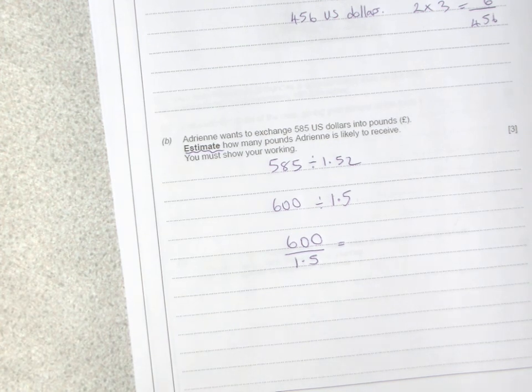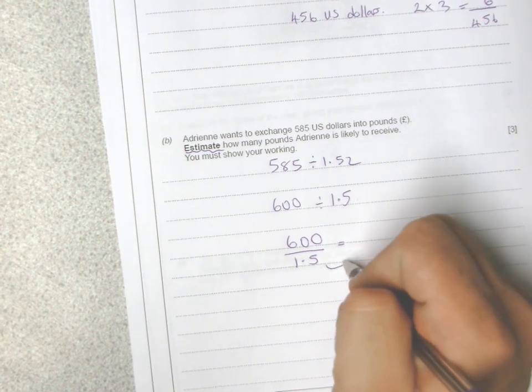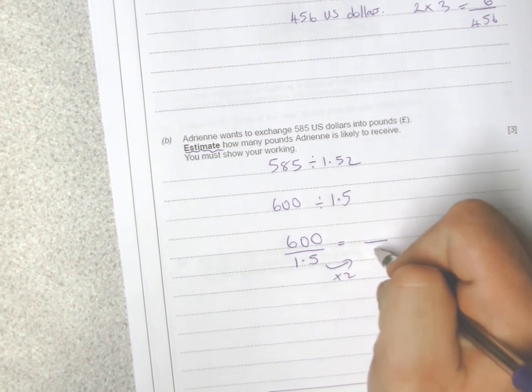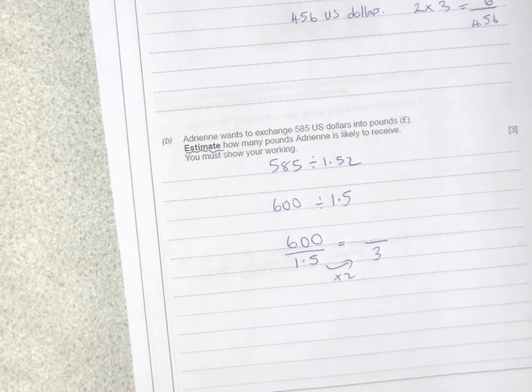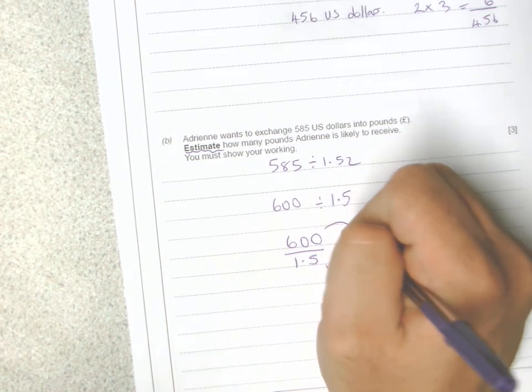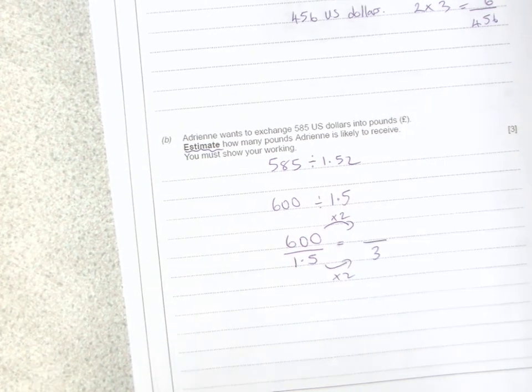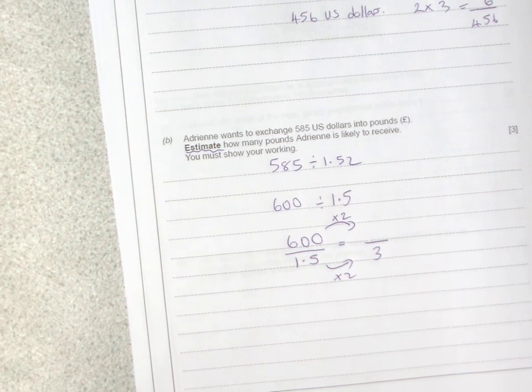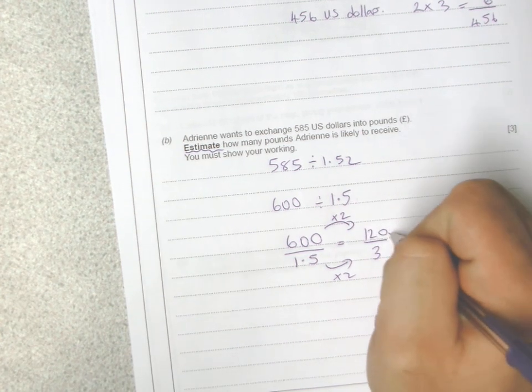If I double the bottom, I'm going to get 3. That's a good way of changing it into a whole number. But if I double the bottom, I have to double the top. 600 times 2 is 1200, and I'm left with 1200 divided by 3.